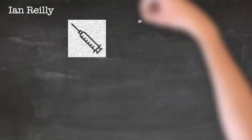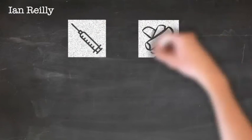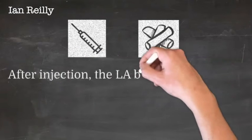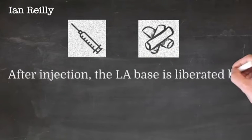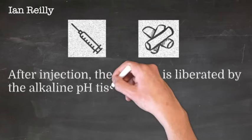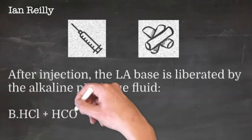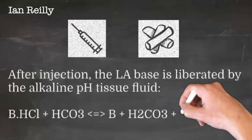We take our local anesthetic as an injectate and it reacts with the relative alkalinity of the tissue. After injection, the local anesthetic base is liberated by the alkaline pH of the tissue. So base hydrochloride plus hydrocarbonate liberates the free base.